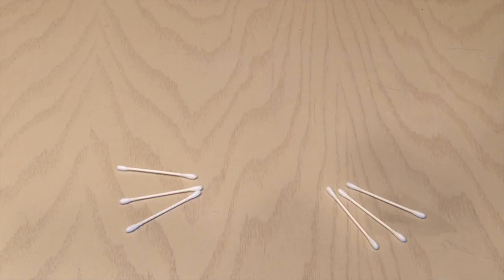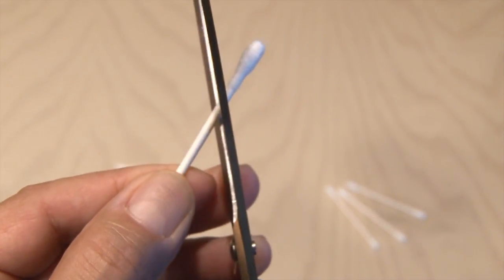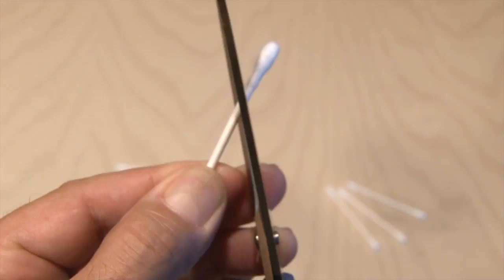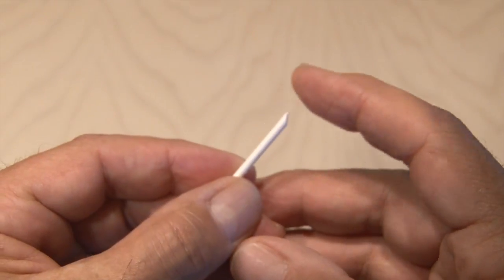Now we're going to make little darts out of our cotton swab, so take a pair of scissors and cut at an angle on one end of the cotton swab. You'll end up with a pointy end. Not too sharp, but sharp enough.